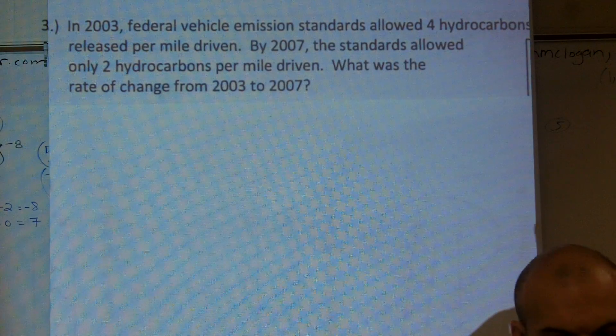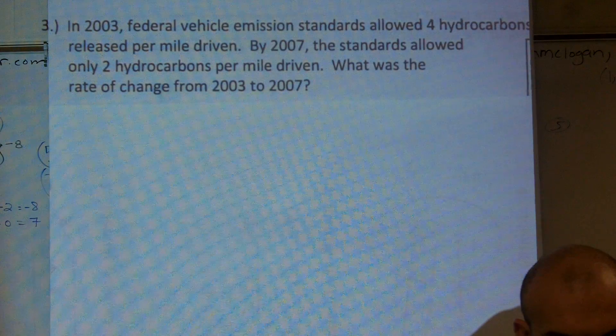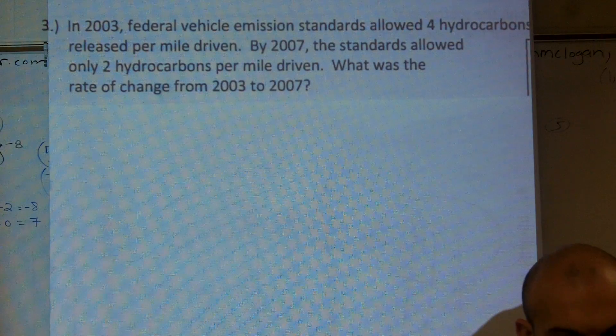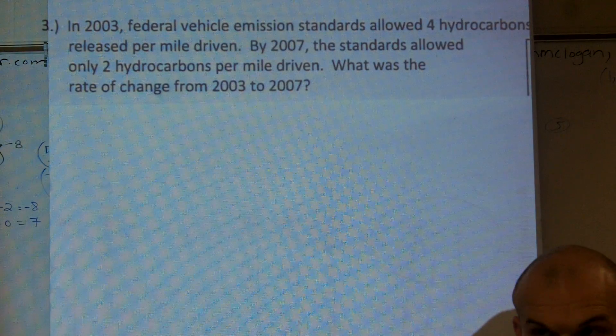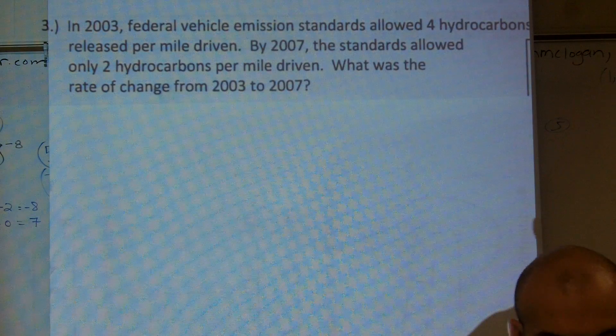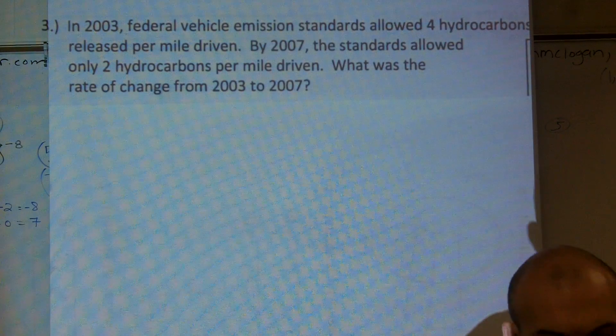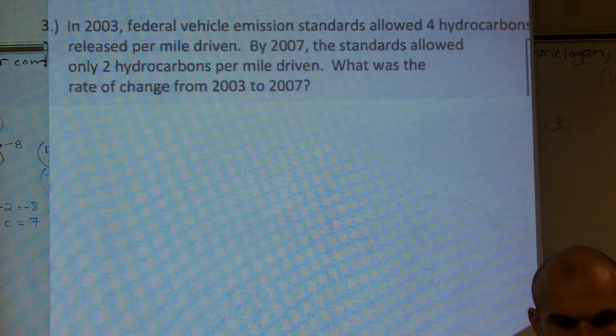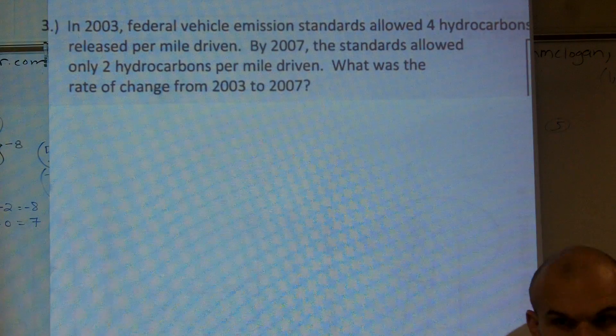In 2003, federal vehicle emission standards allowed 4 hydrocarbons released per mile driven. By 2007, the standards allowed only 2 hydrocarbons per mile driven. What was the rate of change from 2003 to 2007?